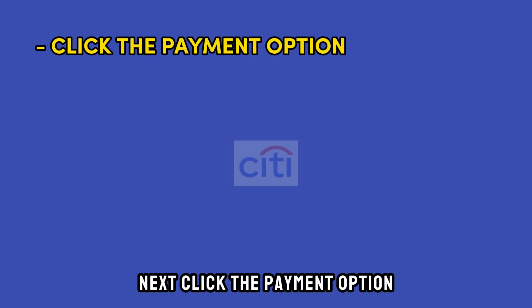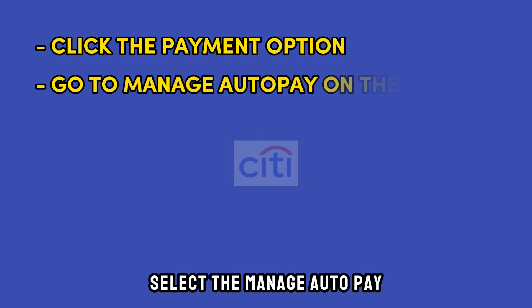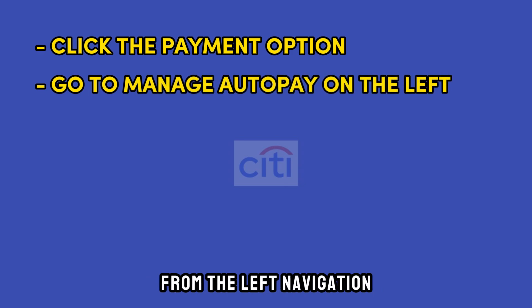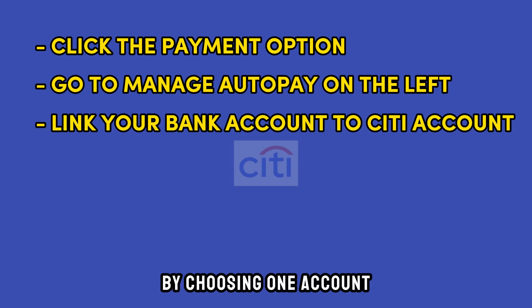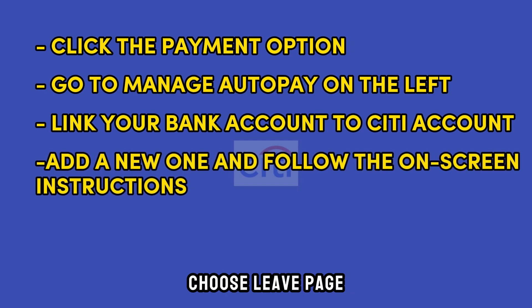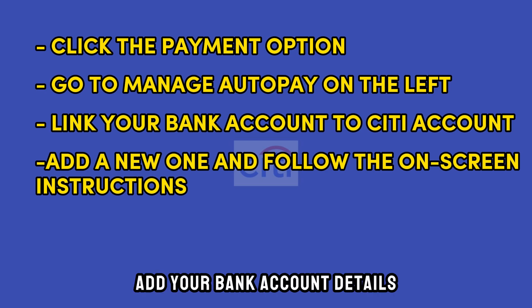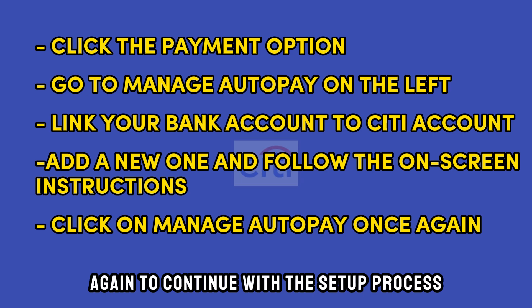Click the Payment option in the top blue navigation and select Manage Auto-Pay from the left navigation. Link your bank account to your Citi account by choosing one account if you have payment accounts. You can also select Add New Payment Account, choose Leave Page when prompted, add your bank account details, and then click Manage Auto-Pay again to continue with the setup process.